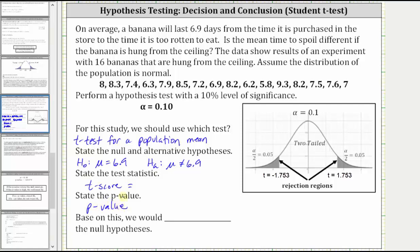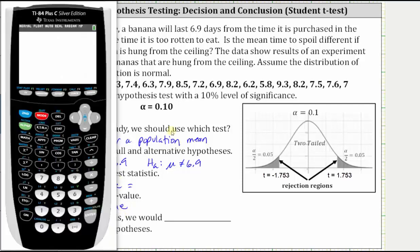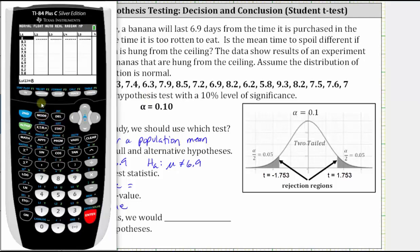So now let's go to the TI-84 to determine the t-score as well as the p-value. Before we perform the t-test though, we do need to enter the data, which I've already done. To enter data, press stat, enter, and I've already entered the data in L1.